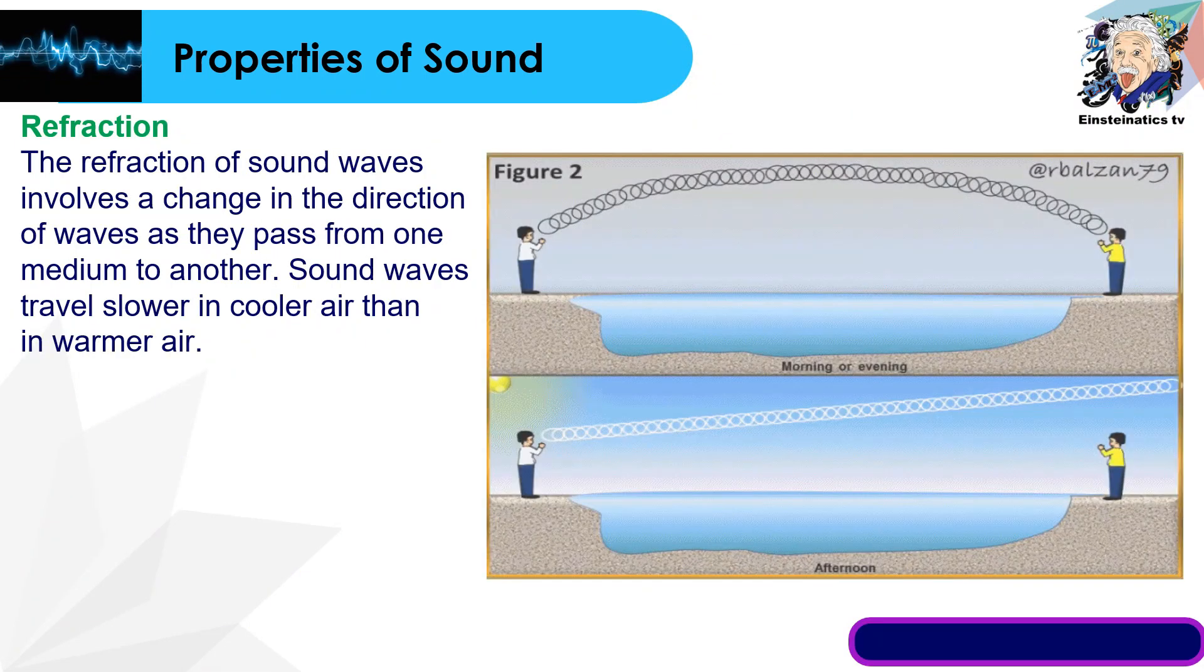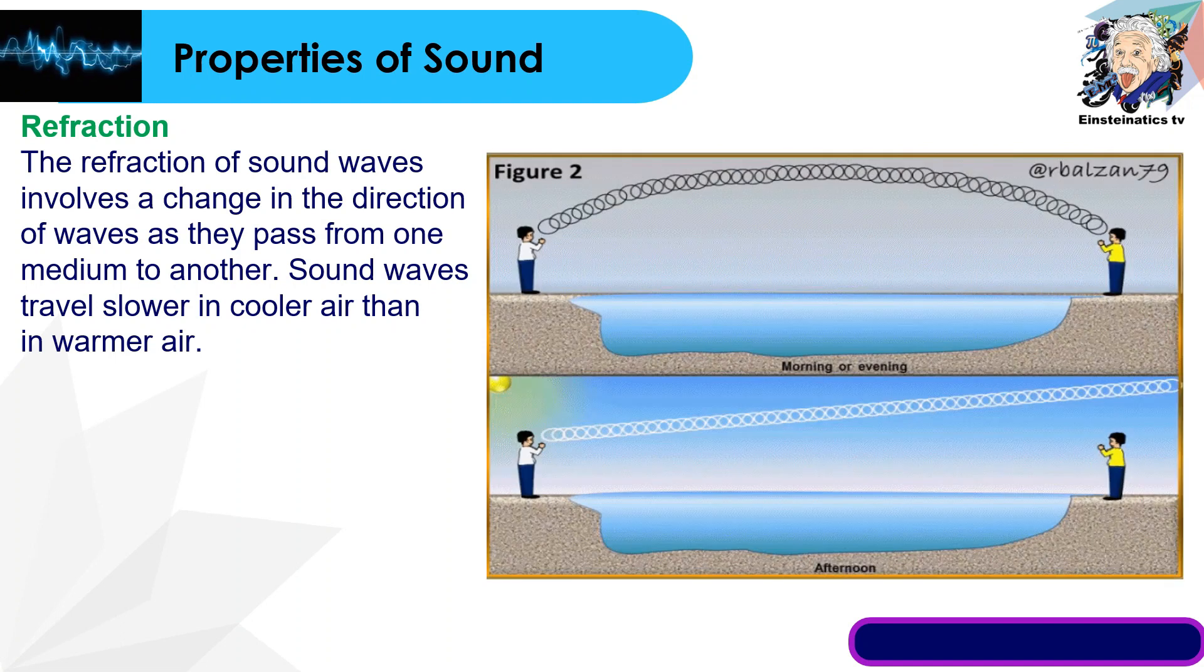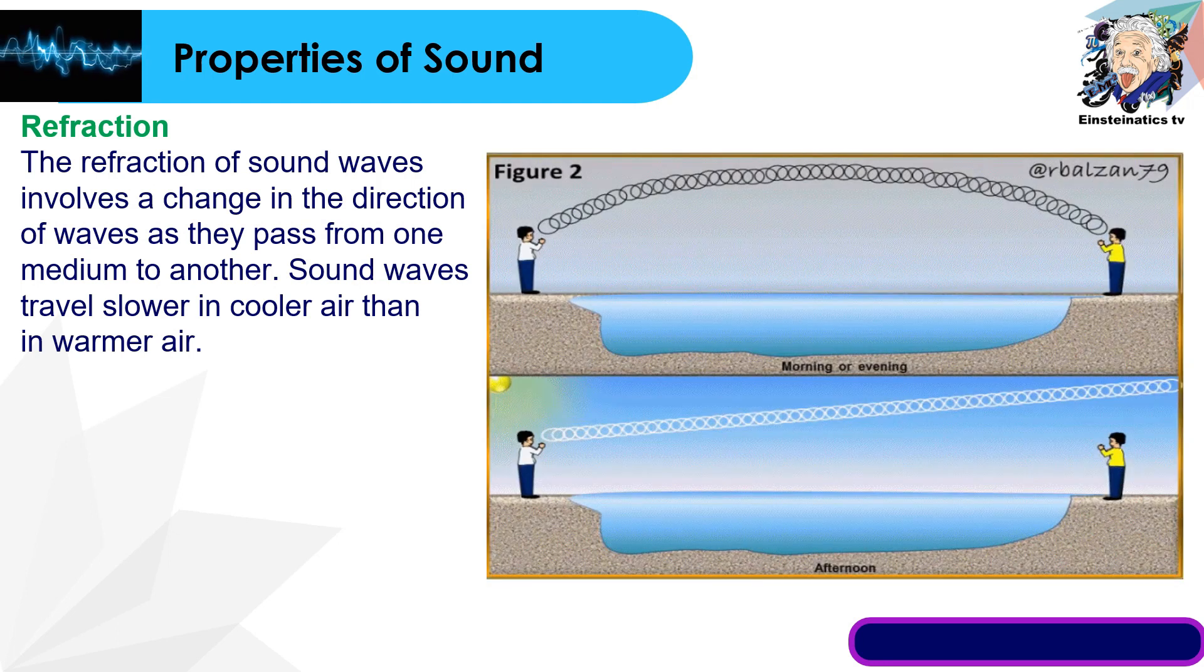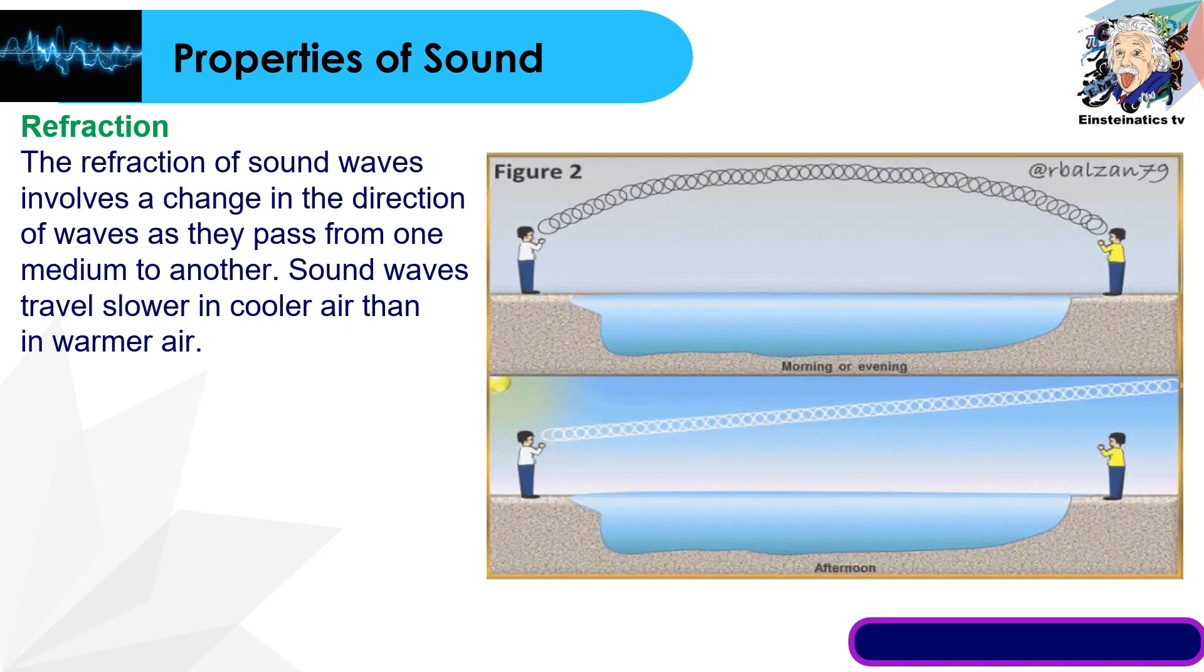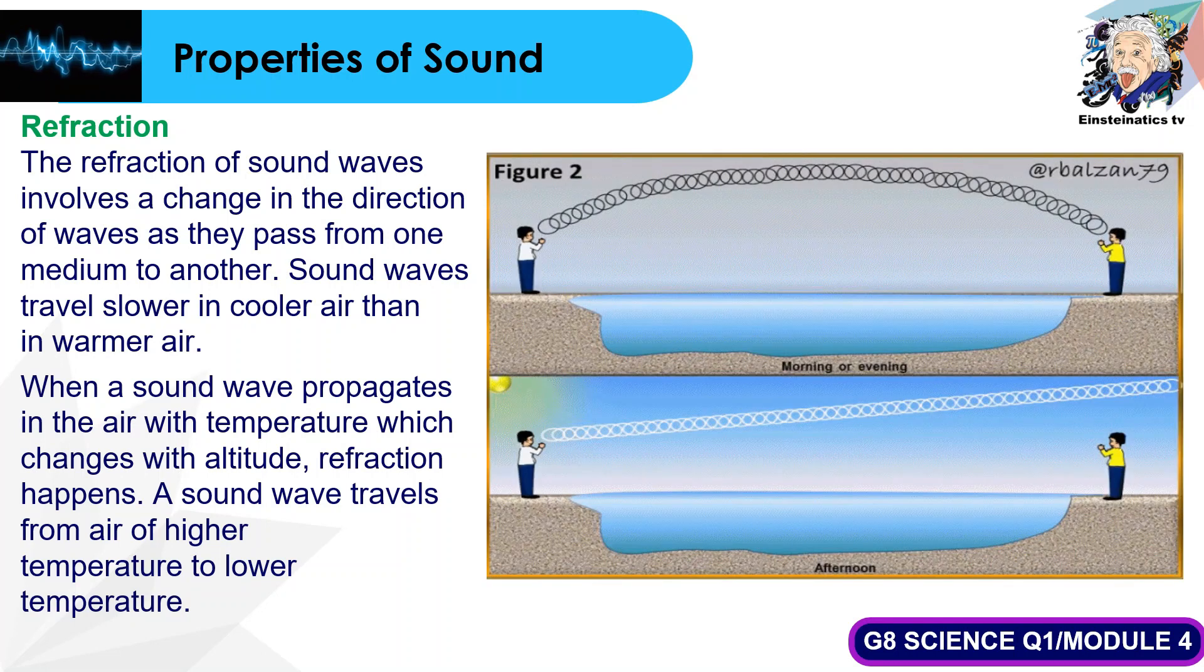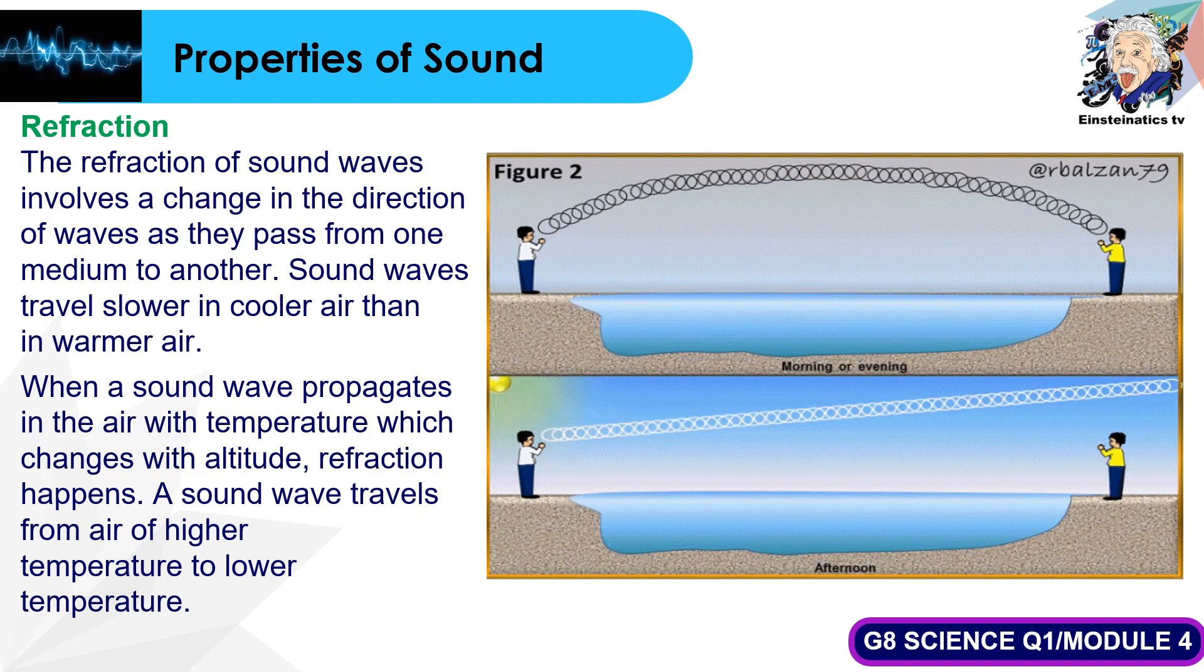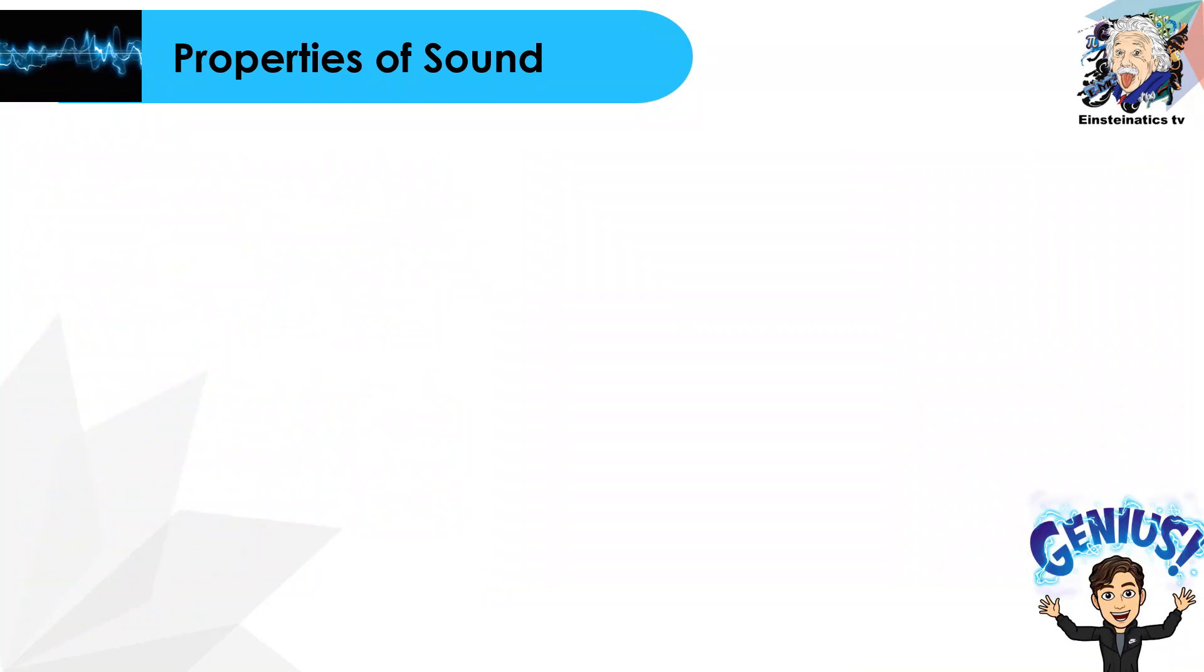The next property of sound is refraction. The refraction of sound waves involves a change in direction of waves as they pass from one medium to the other. You must remember that sound waves travel slower in cooler air than in warmer air. When a sound wave propagates in the air with temperature which changes with altitude, refraction happens. A sound wave travels from air of higher temperature to lower temperature.